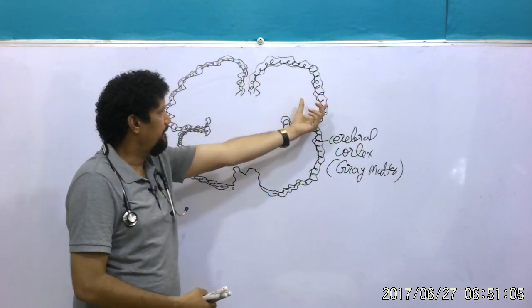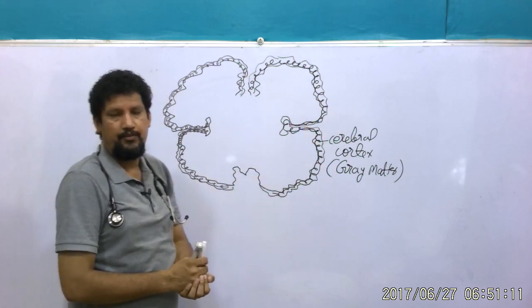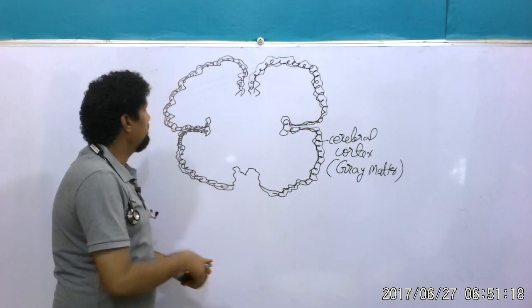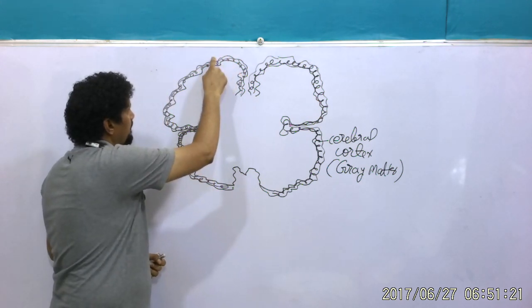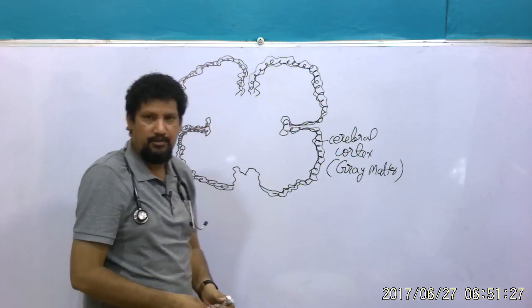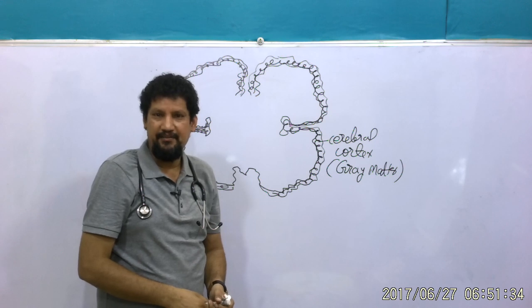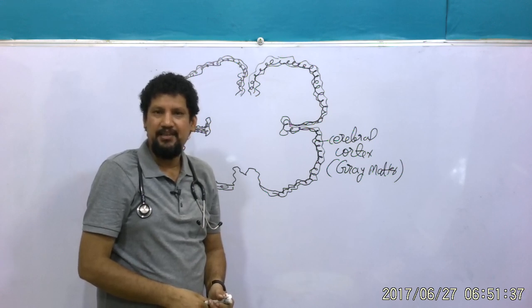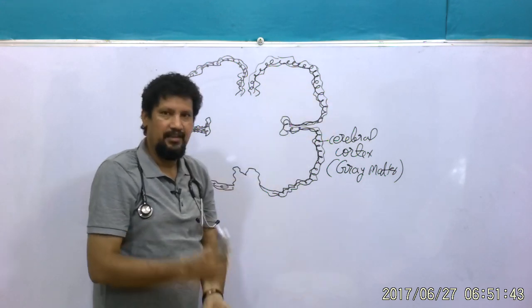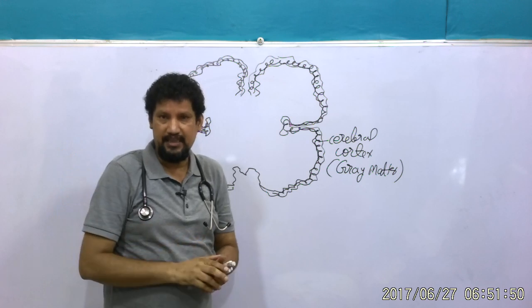These neurons form multiple layers. To increase the number of neurons in the cerebral cortex, we can see elevations and depressions — some shallow and some deep. Simply put, it is like a beautiful garden with mountains and valleys. This is the cerebral cortex. The reason behind these convolutions or uneven surface of the cerebral cortex is the need to accommodate more neurons.